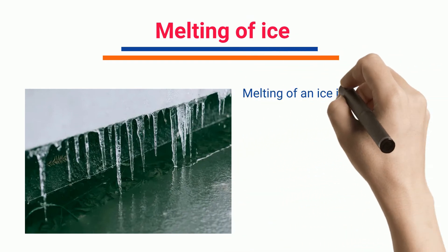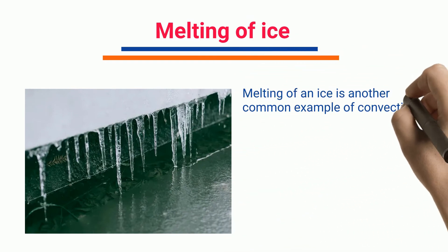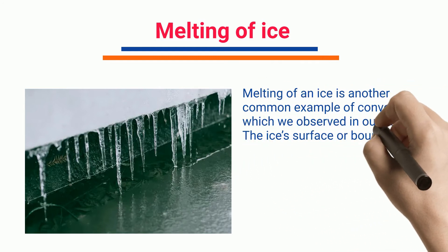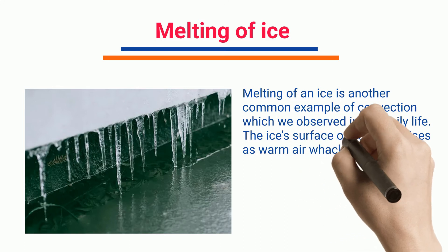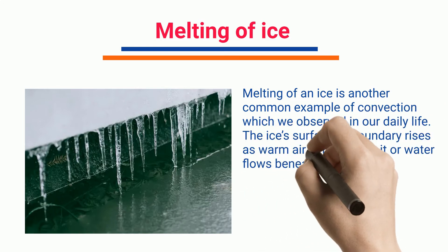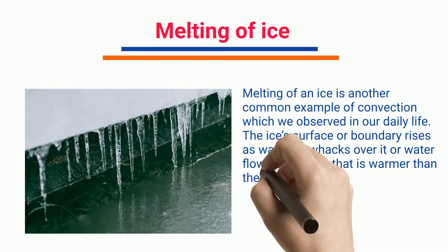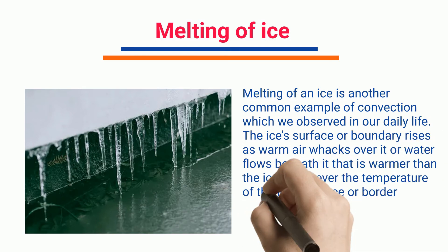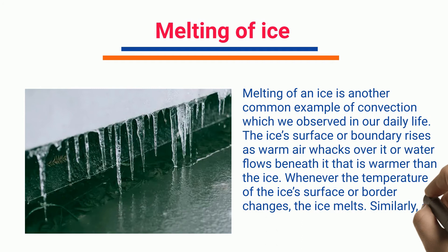Melting of ice: Melting of ice is another common example of convection observed in daily life. The ice's surface or boundary rises as warm air wafts over it or water flows beneath it that is warmer than the ice. Whenever the temperature of the ice's surface or border changes, the ice melts.